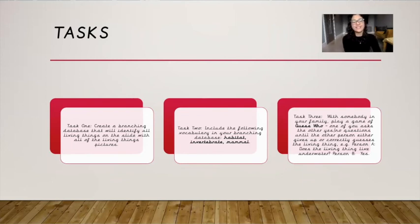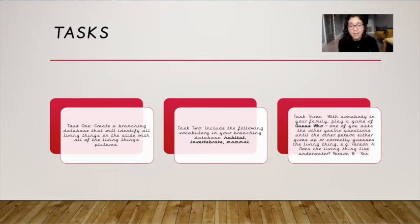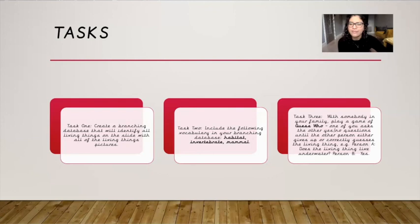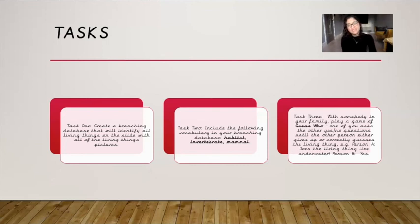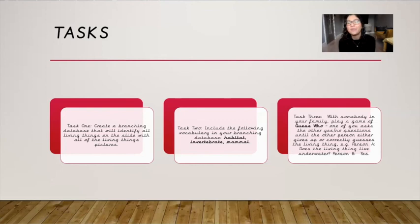Fantastic! And then task number three — with somebody in your family you are going to play a game of guess who. One of you asks the other yes and no questions until the other person either gives up or correctly guesses the living thing. For example, person A could ask 'does my living thing live underwater?' and the other person says yes. You keep asking yes and no questions until you either give up or correctly identify the living thing. Have a go at all three tasks if you can. That's all from me for your science lesson, Williams class — fantastic work listening today, I hope you enjoy your three tasks. I'll see you very, very soon. Stay safe. Bye!